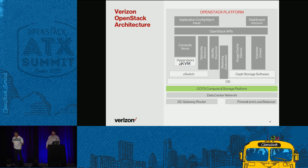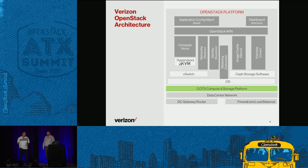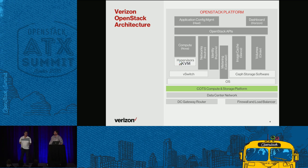We're doing a relatively simple OpenStack environment. Part of our goal is to leverage COTS hardware, separate the hardware from the software functions and enable the addition of different services, different OpenStack services over time. One of our big challenges is how do we move into this framework given our legacy environment, and we'll talk a little bit more about our challenges as we go along.